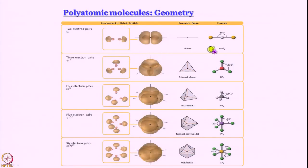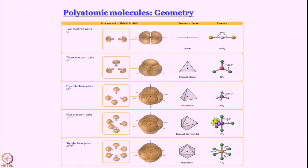If you have 2 bond pairs only, you get a linear molecule like BH2 or BeCl2. If you have 3, like in BF3, it is a trigonal planar molecule. If you have 4, like in methane — which we are going to talk about today — you get a tetrahedral molecule; remember, tetrahedral not square planar. For PF5 the geometry is trigonal bipyramidal (TBP), and for SF6 we have an octahedral geometry. All this is because repulsion between pairs of electrons must be minimized.